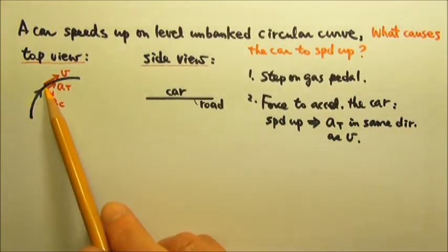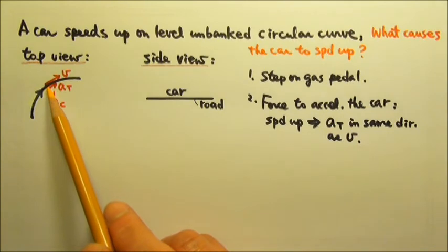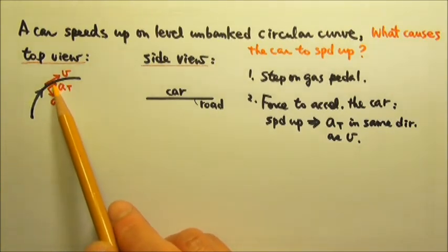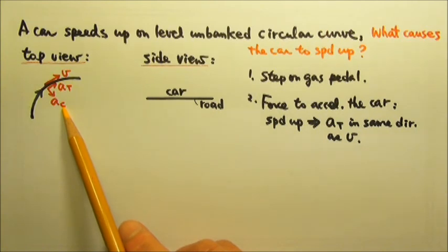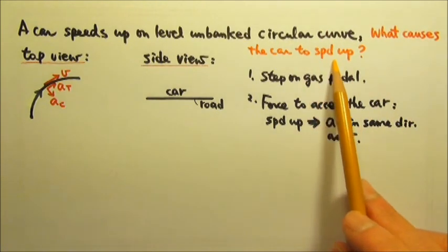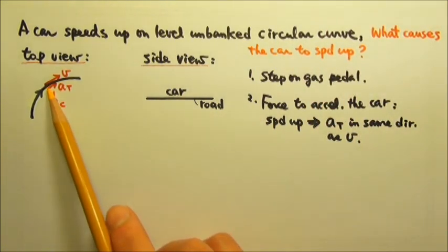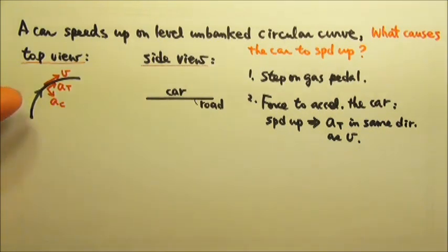So the friction has a component to provide that tangential acceleration, and it has a component to provide the centripetal acceleration. But the one that causes the speed to change is the component of the friction that goes parallel to the velocity.